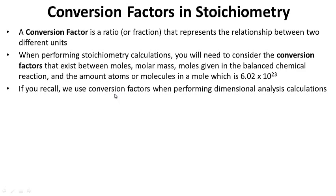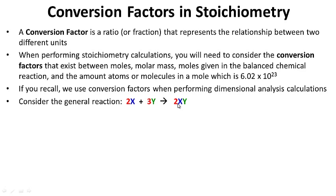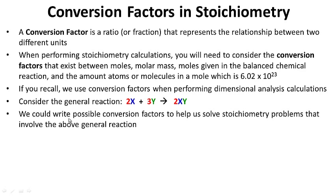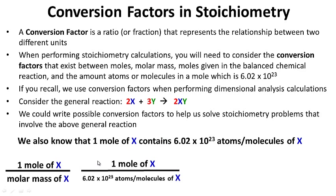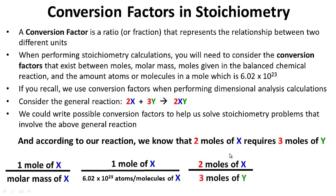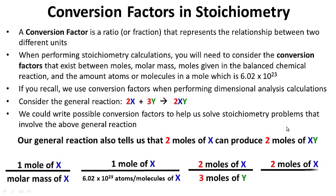We use conversion factors when performing dimensional analysis calculations. Consider the general reaction where 2X + 3Y produces 2XY. We could write conversion factors to solve stoichiometry problems. For example, one mole of X equals the molar mass of X. One mole of X contains 6.02 × 10²³ atoms or molecules of X. According to our reaction, two moles of X requires three moles of Y (our mole ratio), and two moles of X can produce two moles of XY.